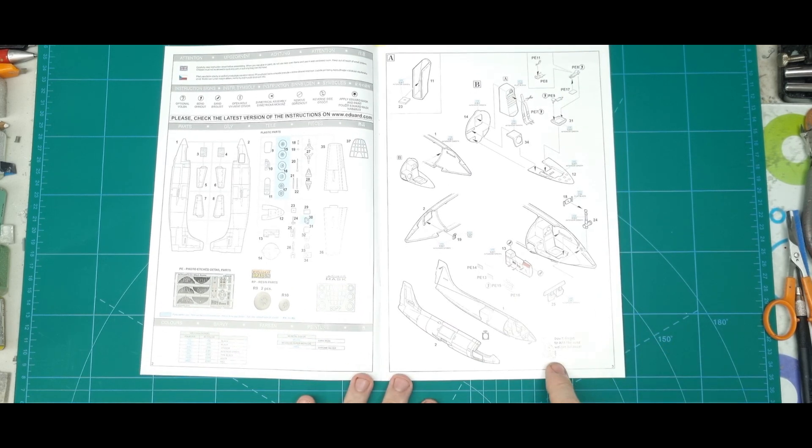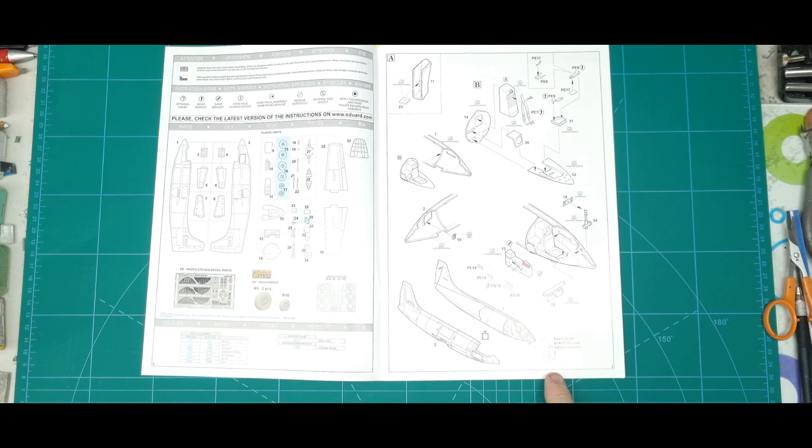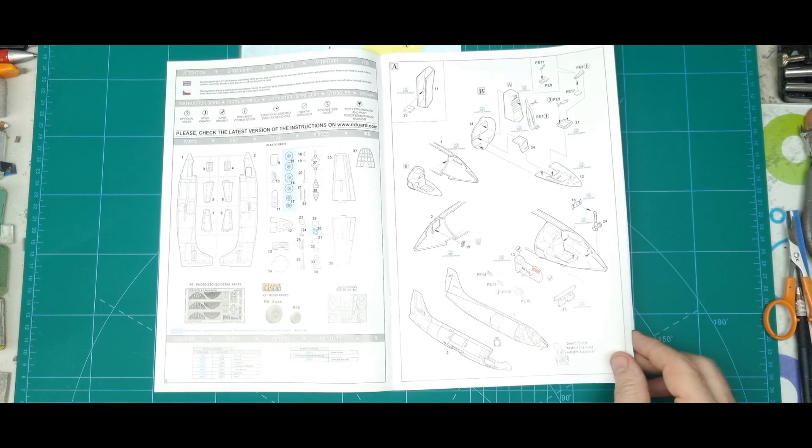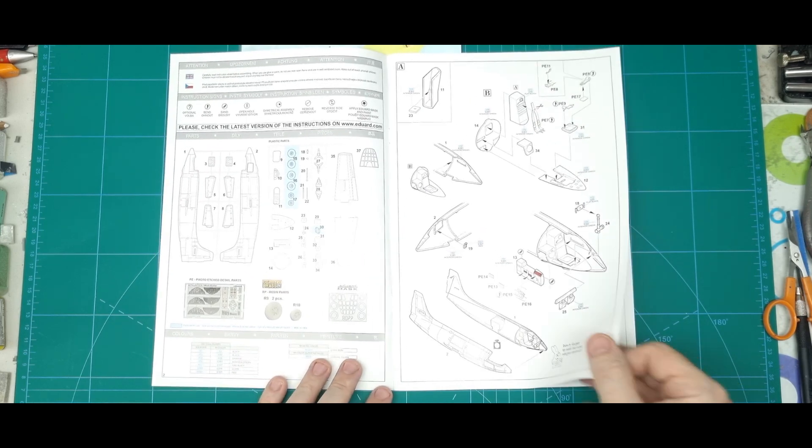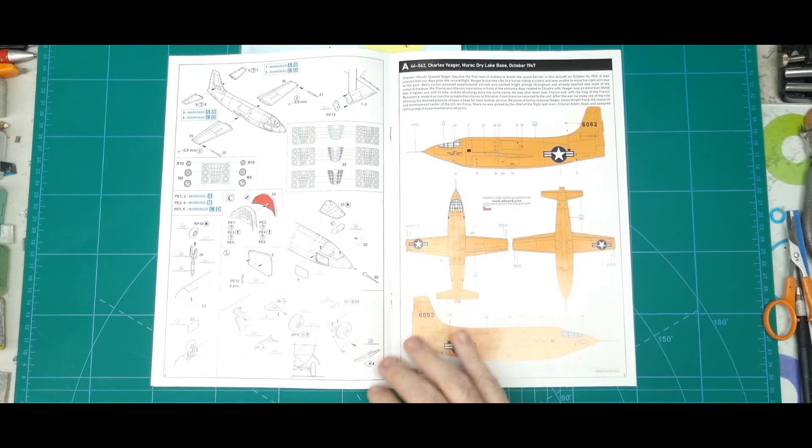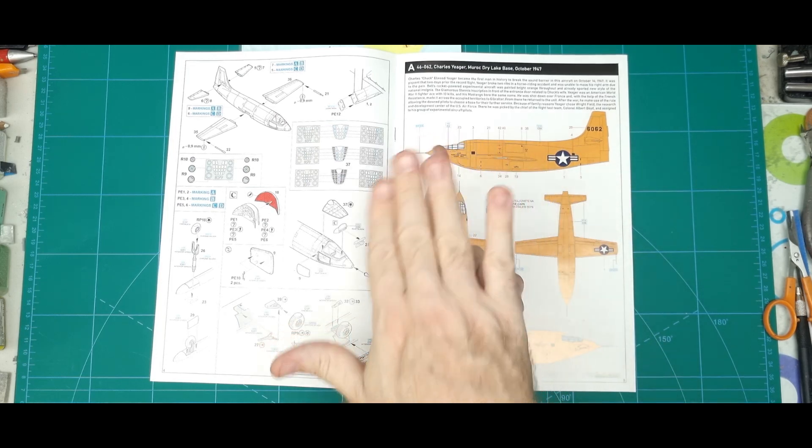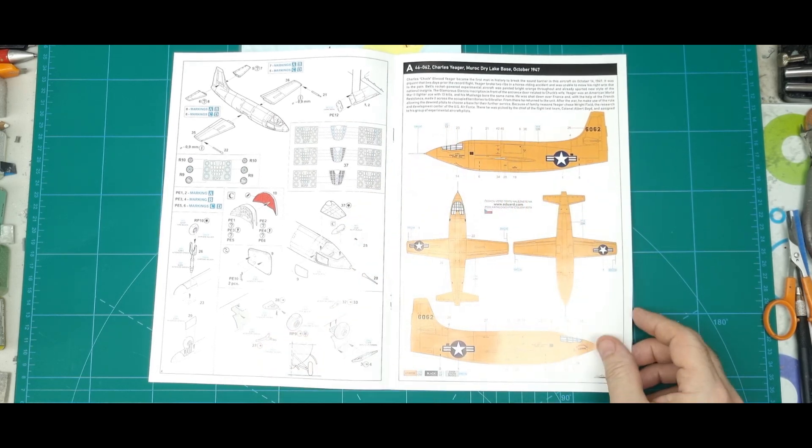A bit of a reminder from Eduard to add some nose weight, although they don't tell you specific weight. So it'll be a bit of tape it together and put the old balance on your finger and work out how much you need.